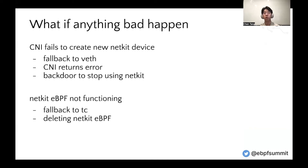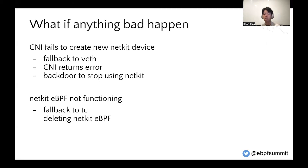Before we get everything prepared, we also need to handle what if anything bad happens, because at this moment we cannot guarantee that NetKit works properly as expected. What if CNI fails to create a new NetKit device? We might fall back to veth, or let CNI return an error to containerd, or create a backdoor for CNI to stop using NetKit. Or maybe the NetKit creates successfully but the NetKit eBPF is not functioning — then we need to fall back to TC and delete the NetKit eBPF.